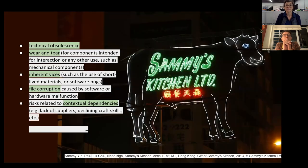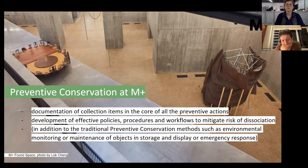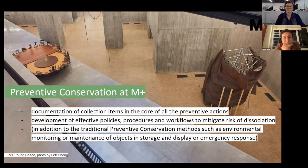Additionally, while analyzing the ten agents of deterioration for assessing risks to contemporary artworks, we identified specific risks that are difficult to position within this framework — for example, technical obsolescence, wear and tear, inherent device issues, file corruption caused by software or hardware malfunction, and risks related to contextual dependencies like lack of suppliers or declining craft skills. To summarize, our approach to address risks to the long-term preservation of contemporary art forms at M+ was to put documentation at the forefront of all preventive actions and to take initiative for development of policies, procedures, and workflows to mitigate risks of dissociation at the various stages of museum lives of collection items.